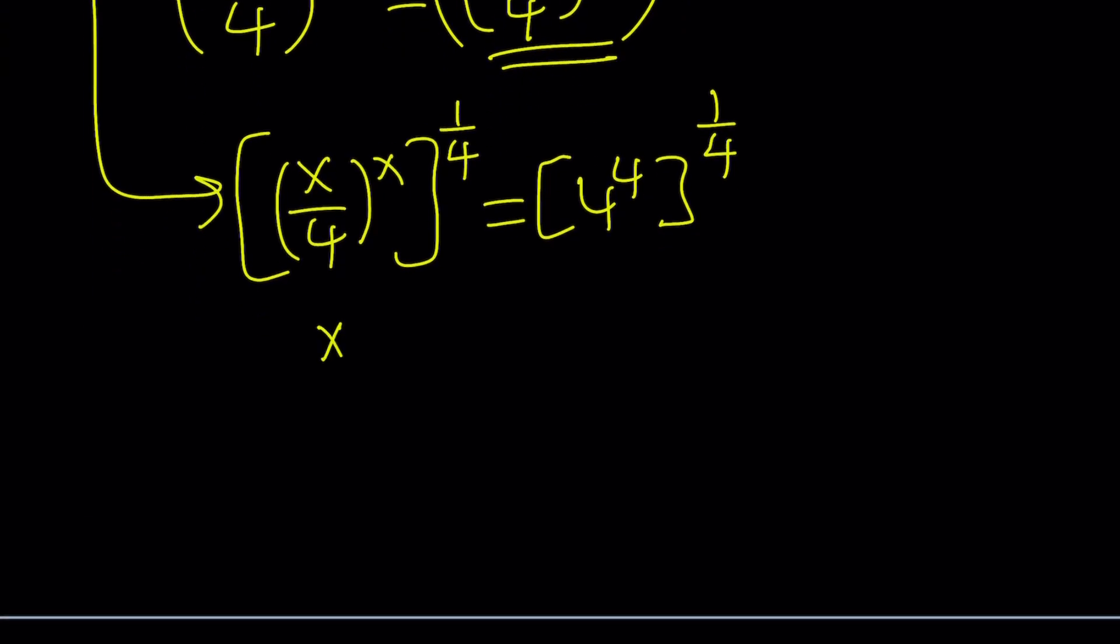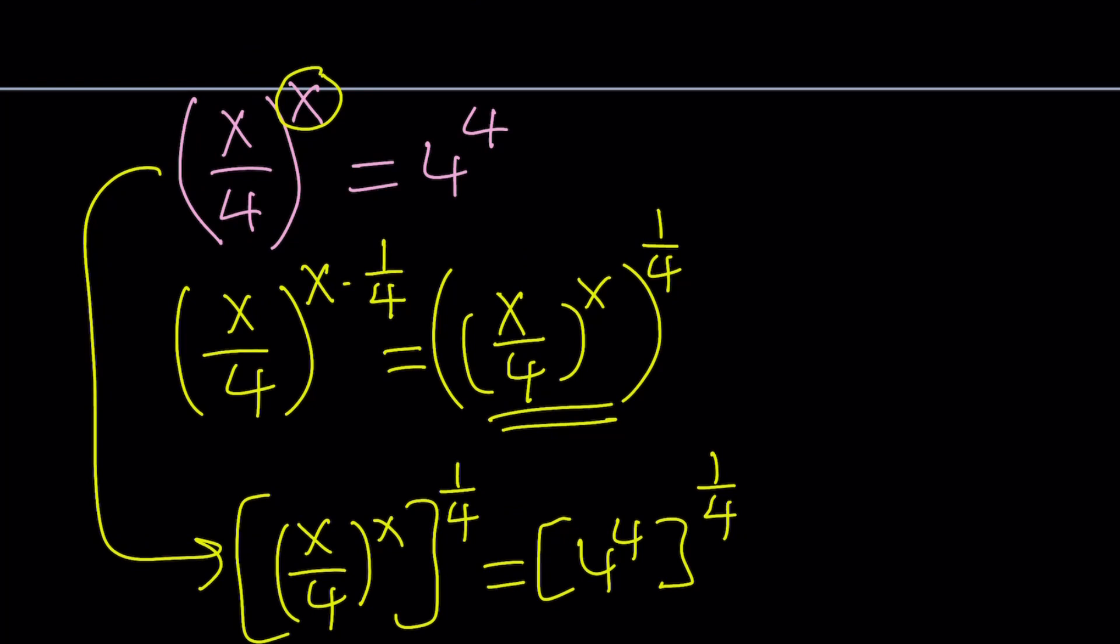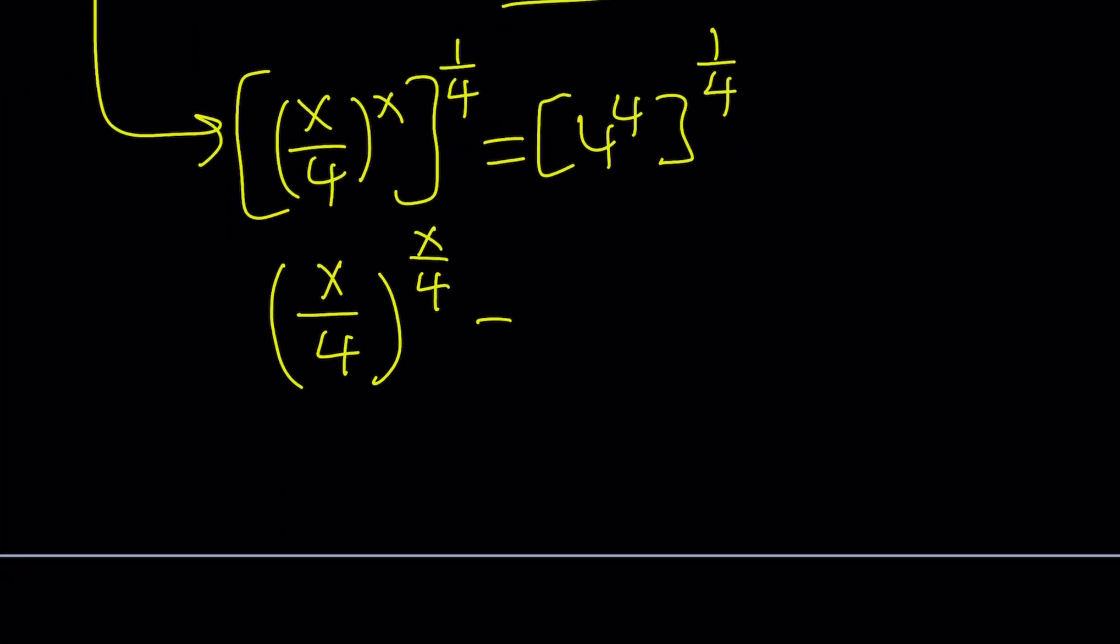Then we get the following, x over 4 to the power x times 1 fourth, which is x over 4. By the way, to get this idea, I just work backwards. So what do I need to make it x over 4? Make sense? And this equals, we're going to multiply 4 and 1 fourth, and that's going to give us 1, so I get 4 to the power 1.